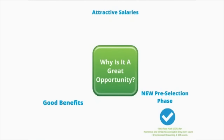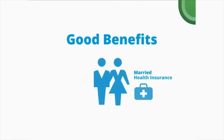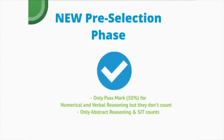Why is this a great opportunity? Most of you would know it's a great opportunity to work for the EU — not only because the salaries are very attractive, especially for an AD5 position. The basic net monthly salary is roughly €4,500, which is very attractive even in Brussels. There are also very good benefits if you are married, have children — who can go to European schools — and health insurance benefits among various other advantages of working for the European institutions.